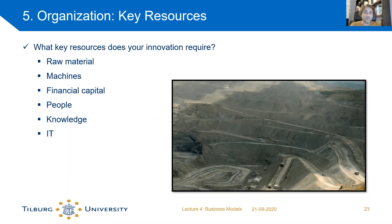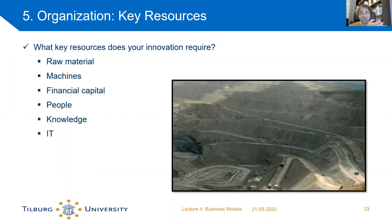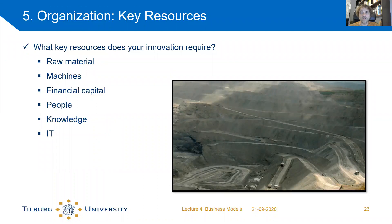The first aspect of the organization part is key resources — what key resources does your innovation require? Resources are broader than raw materials. Resources include raw materials, machines, capital such as buildings, financial capital, the people you need to hire, the knowledge you want in your organization, and information technologies. Basically, resources are everything you need to create your innovation — from buildings and raw materials to people and the information technology needed to support people's activities.